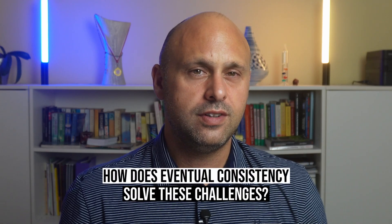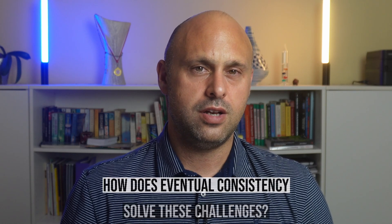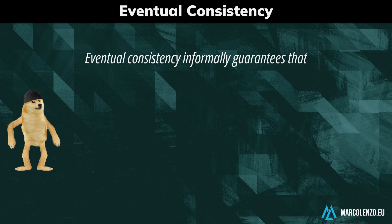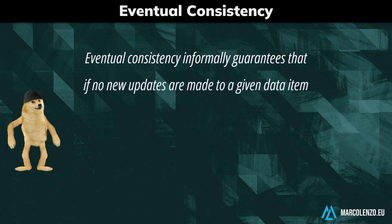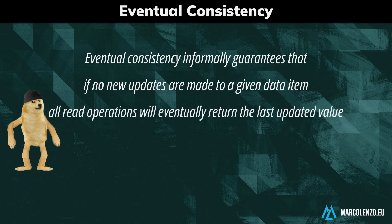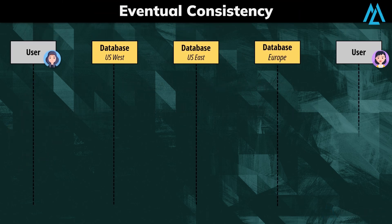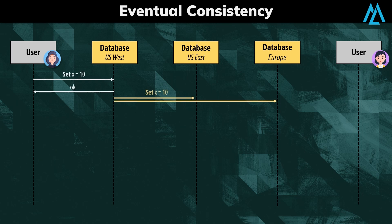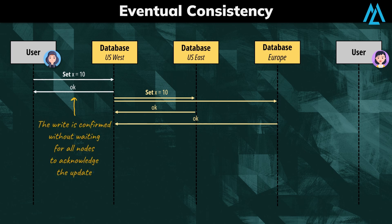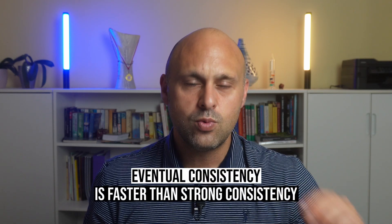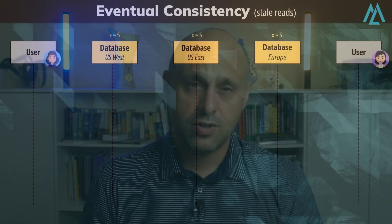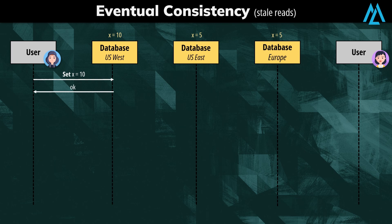Let's see how eventual consistency offers a solution to these challenges. Eventual consistency informally guarantees that if no new updates are made to a given data item, all read operations will eventually return the last updated value. This is possible because replication is optimistic. When a user performs an update, the write is considered successful without waiting for confirmation from other nodes. If we consider performance, eventual consistency is way faster than strong consistency, because updates are confirmed without waiting for replica convergence.